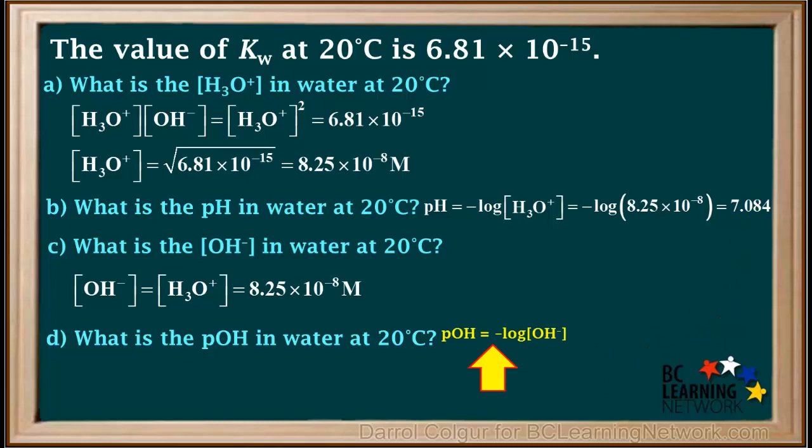We could also have said that the pOH is the negative log of the hydroxide ion concentration, which is the negative log of 8.25 times 10 to the negative 8, which is 7.084.